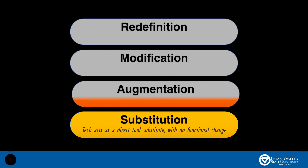At the augmentation level, technology acts as a direct tool substitute with functional improvements. For example, students take a quiz using a Google form instead of using pencil and paper. There is some functional benefit here in that, besides saving paper, students and teachers can receive almost immediate feedback, which may motivate students to be more engaged in learning.